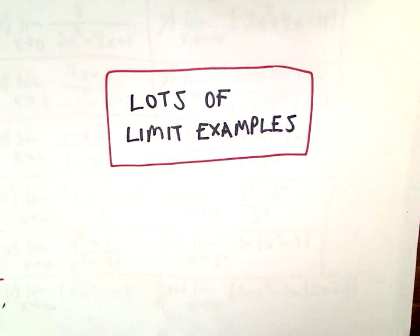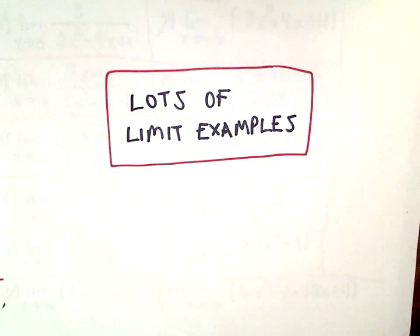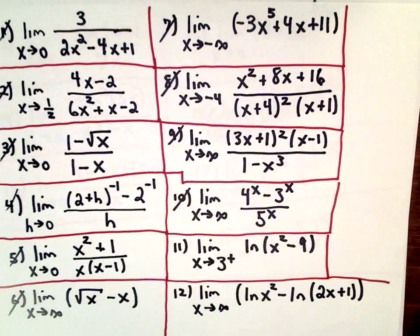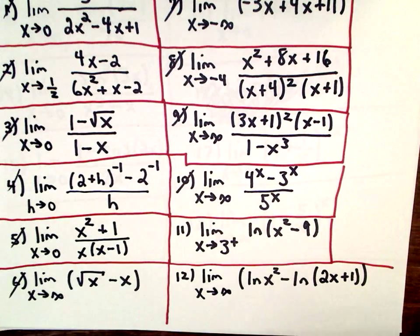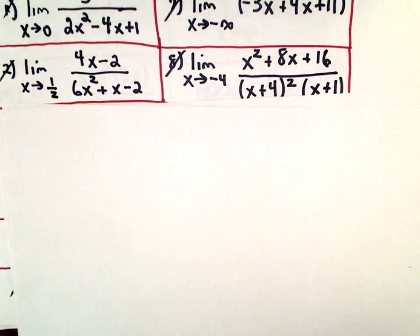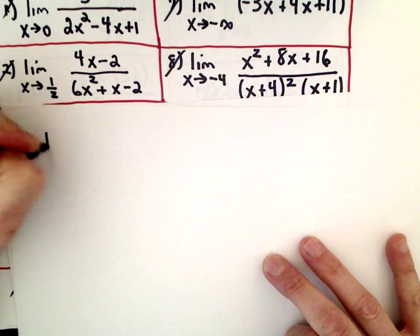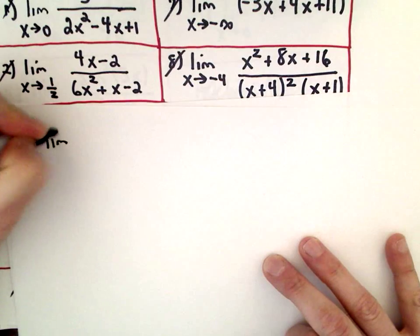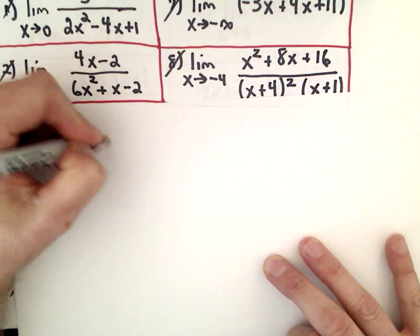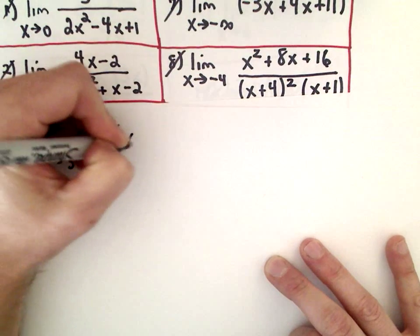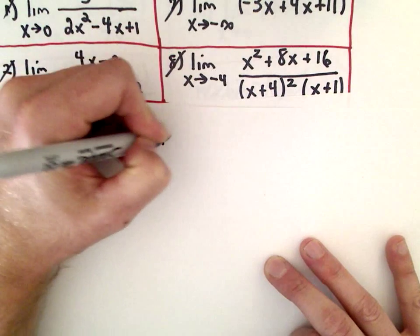Let's do more limits. In this video I was going to do problems 11 and 12, and these both deal with logarithms. Problem 11 is the limit as x approaches 3 from the right of the natural logarithm of x squared minus 9.